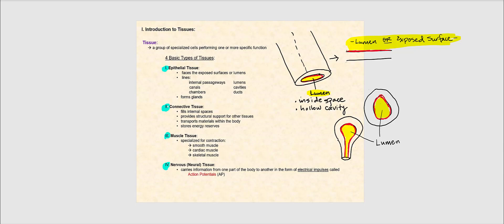Epithelial tissue is the tissue that faces the exposed surfaces, or the lumens. It lines internal passageways, canals, chambers, lumens, cavities, and ducts. Lastly, it forms glands. For example, your sweat glands and your oil glands are made of epithelial tissue.